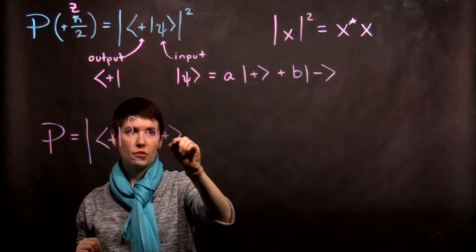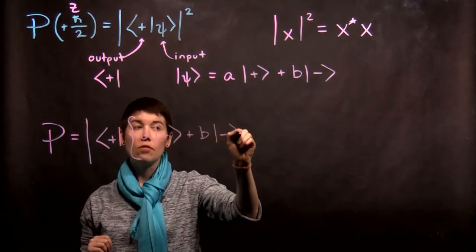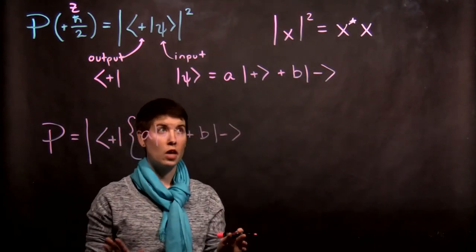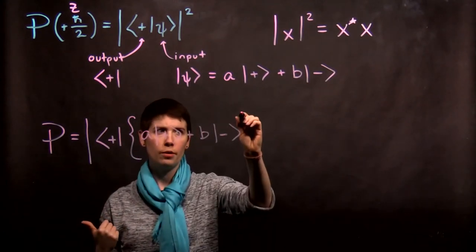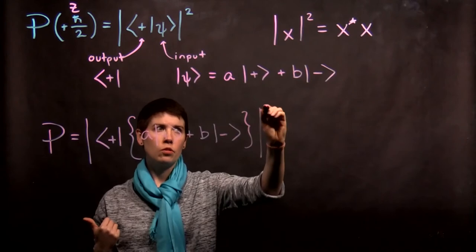bracket and re-express my ket in terms of the basis vectors. And that a is a scalar, that b is also a scalar. And these can be complex scalars, so keep in mind that it's not necessarily just an integer or even a real number.